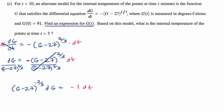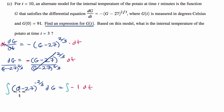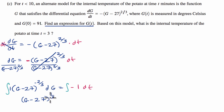Integrating both sides: on the left, we can use u-substitution with u equals g minus 27, so du equals dg. Equivalently, the derivative of g minus 27 is just 1, so we integrate with respect to g minus 27 using the reverse power rule. We increment the exponent: negative 2/3rds plus one is positive 1/3rd. Then we divide by the new exponent — dividing by 1/3rd is the same as multiplying by 3.